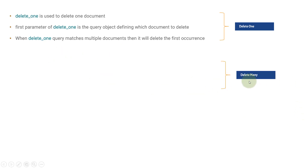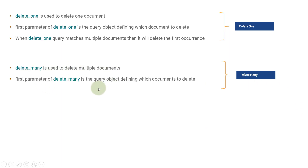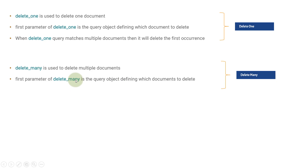Delete_many does what? It deletes all the matching documents. Delete_many is used to delete multiple documents. The first parameter of delete_many is the query object defining which documents to delete. We need to provide a filter or query object to filter out the documents you want to delete. If you want to delete all users with age 10 and there are more than five users with age 10, then all five documents will be deleted.